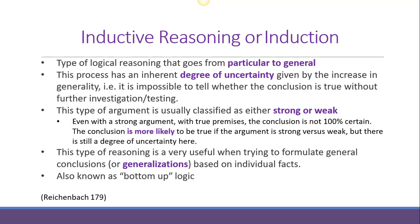Next up we have inductive reasoning, or induction. With induction we are flipping the pyramid — we are going from particular or specific to general. Because we are taking specific evidence and trying to draw a more general conclusion from it, there's going to be some degree of uncertainty. With inductive reasoning, we classify these arguments as either strong or weak, or somewhere on that spectrum.